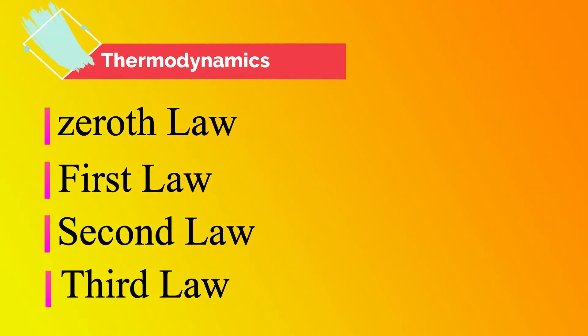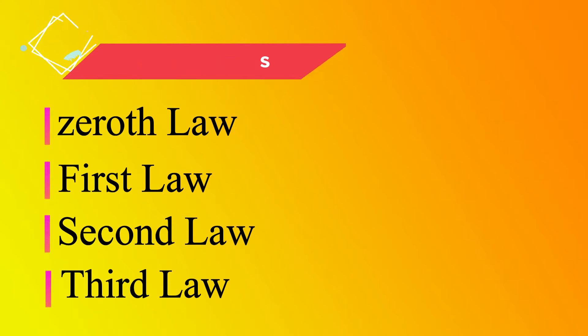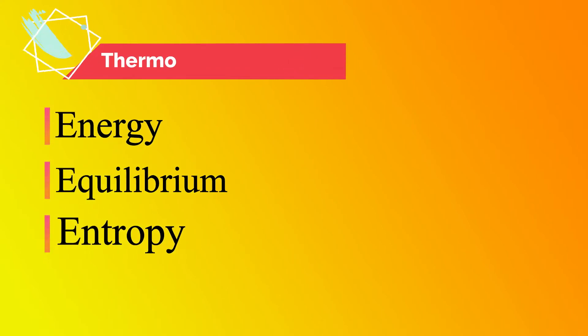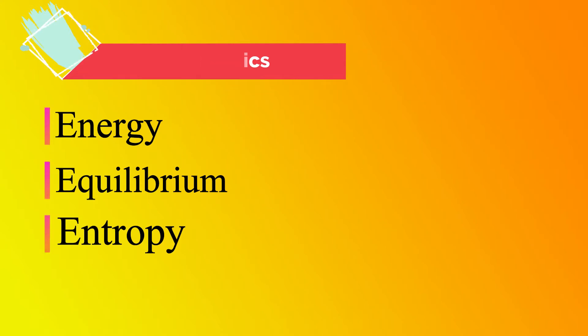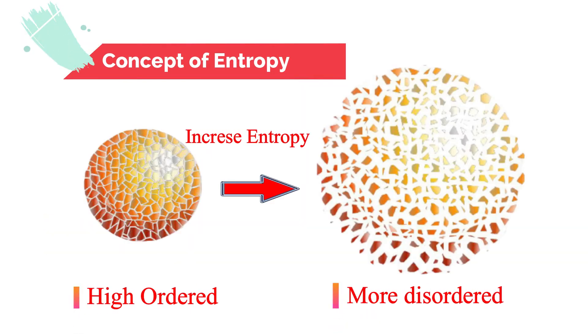These laws are based on experimental observation and have no mathematical proof. Like all physical laws, they are based on logical reasoning. In fact, thermodynamics is a study of three E's — namely energy, equilibrium, and entropy.